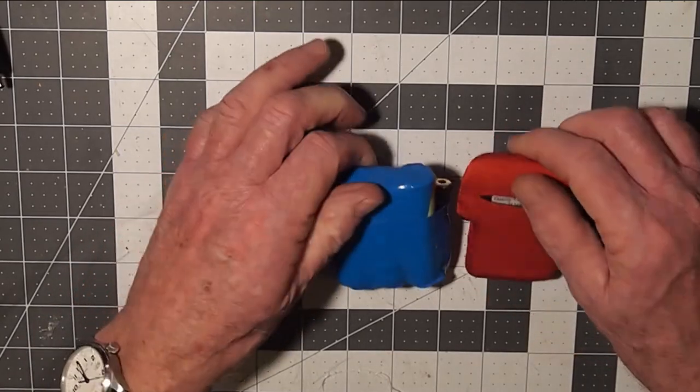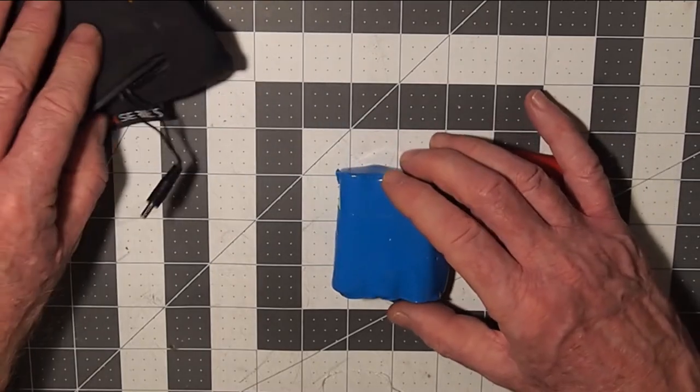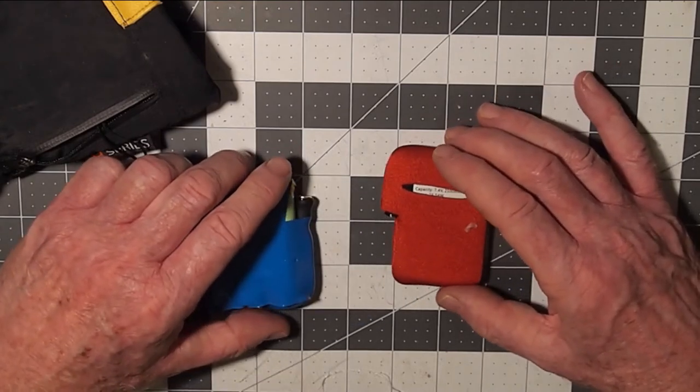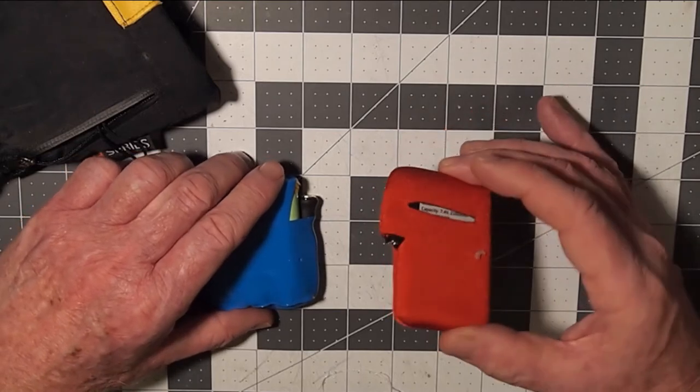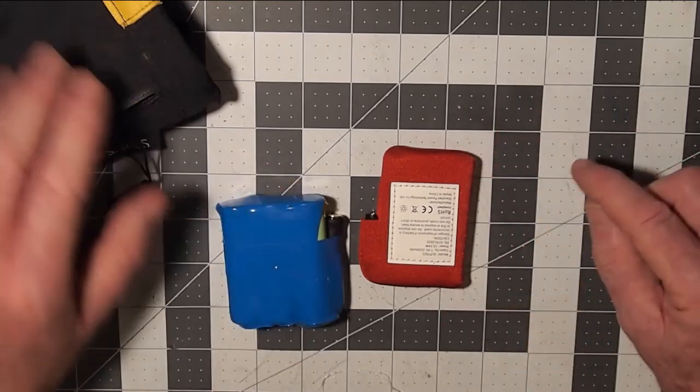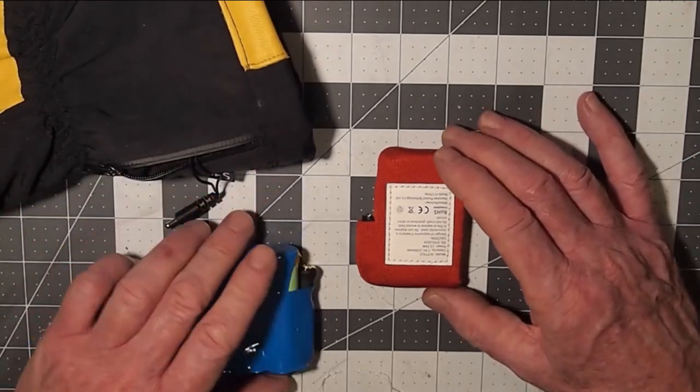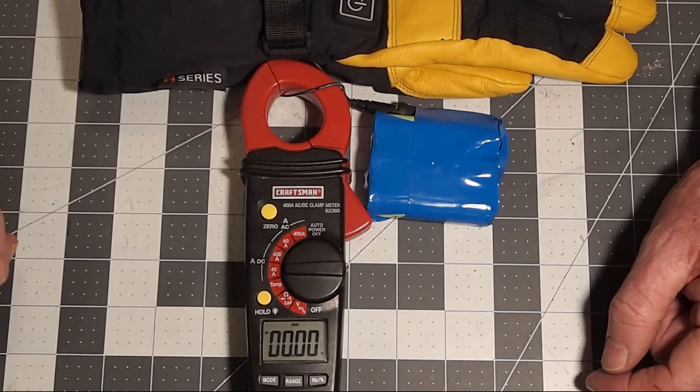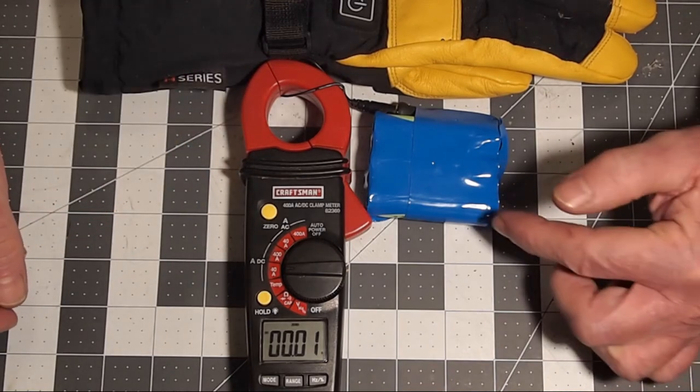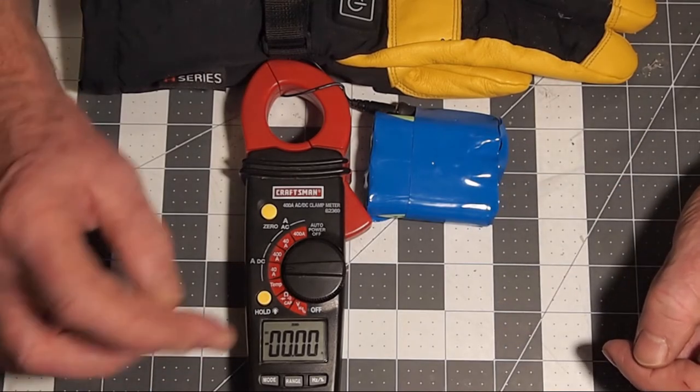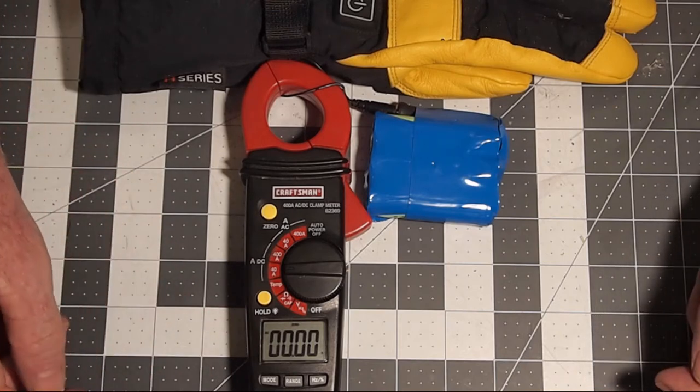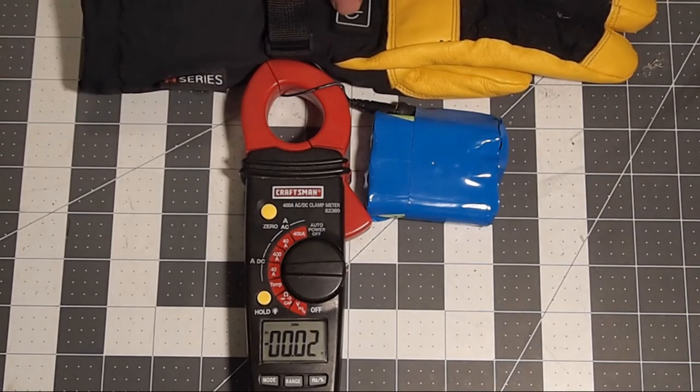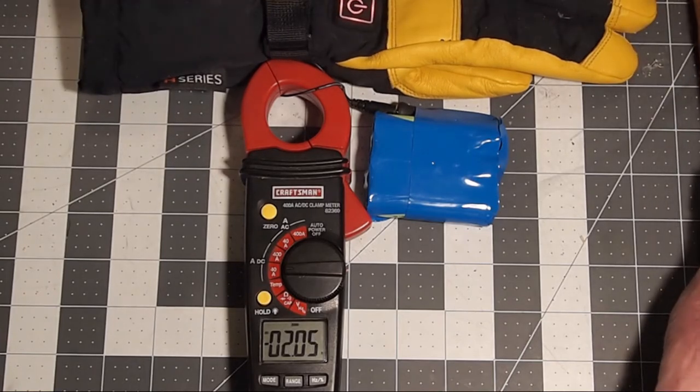The first thing we're going to do is look at how much current we are drawing from this glove with the newer battery pack. As a refresher, I believe we saw something like 1.4 to 1.5 amps being drawn by the 7.4 volt battery packs that come with the glove. I've got my clamp meter attached to one side of the power line. I'm going to turn the glove on now on the highest power setting, which is red.